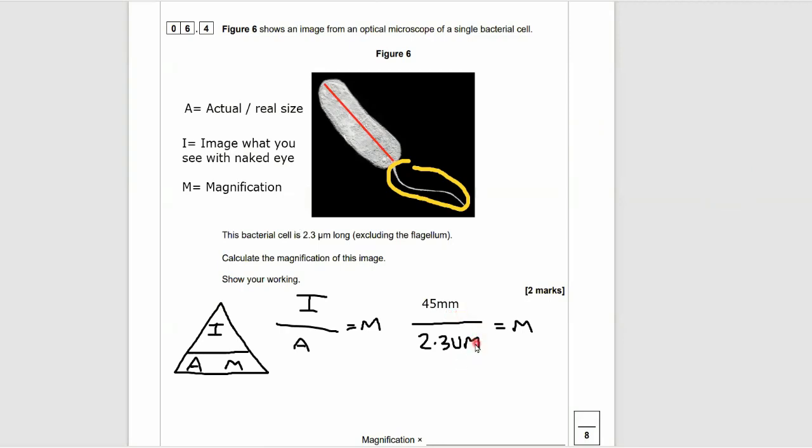So now the issue is that the micrometres and the millimetres are not the same unit. So I have a choice: I can either turn the micrometres to millimetres, or I can turn the millimetres to micrometres. What I prefer to do is turn the millimetres to micrometres, because you just times by a thousand. So times your millimetres by a thousand, so we end up with 45,000 micrometres on the top.